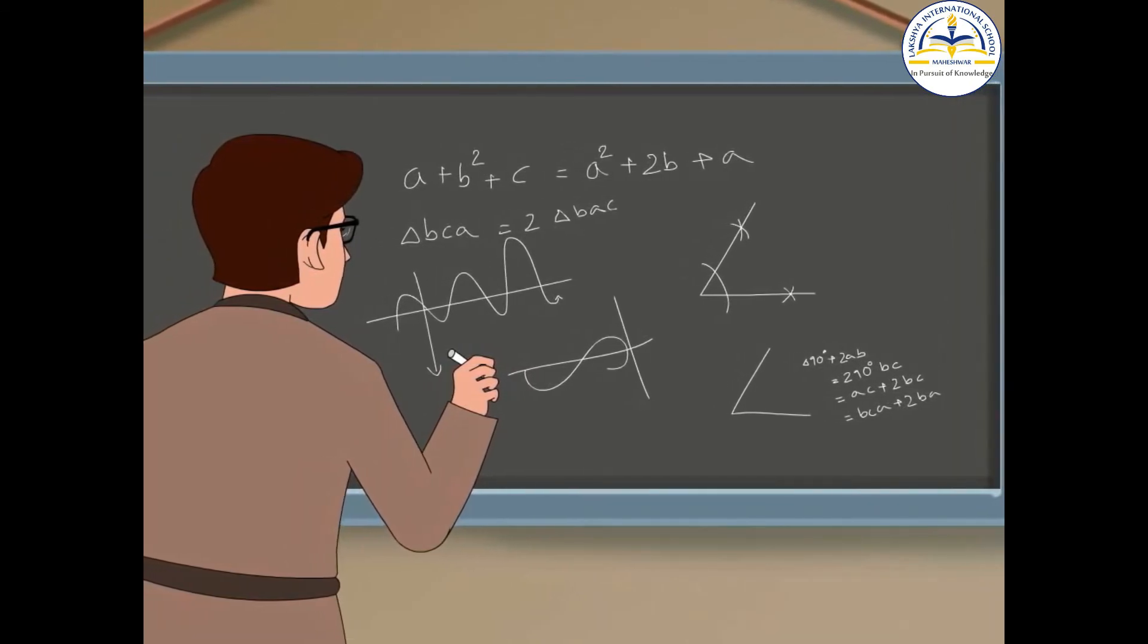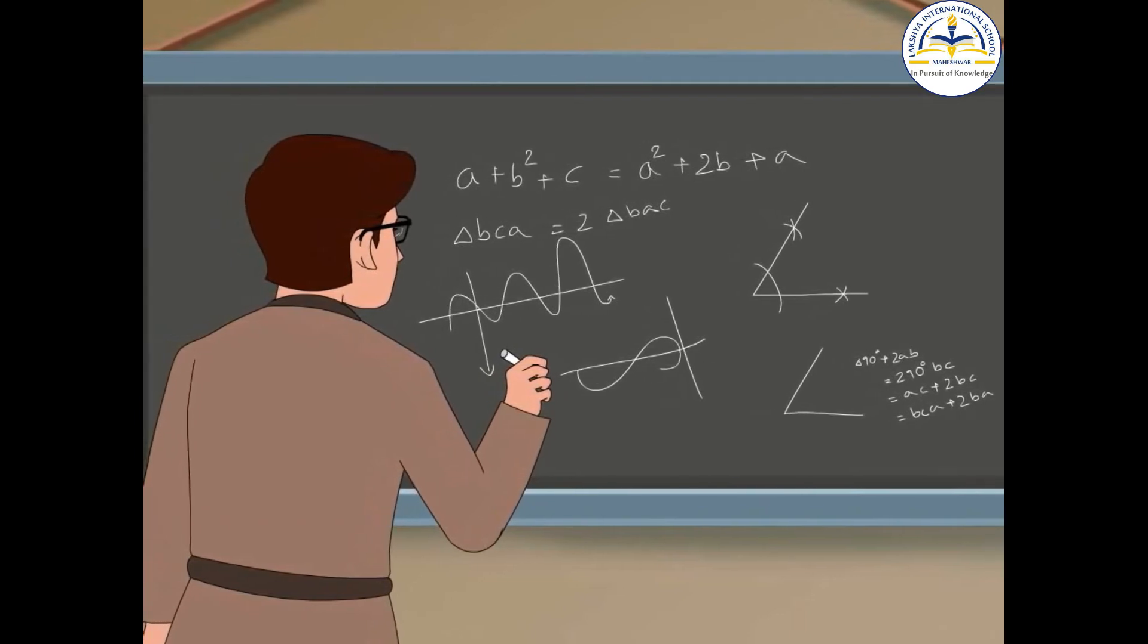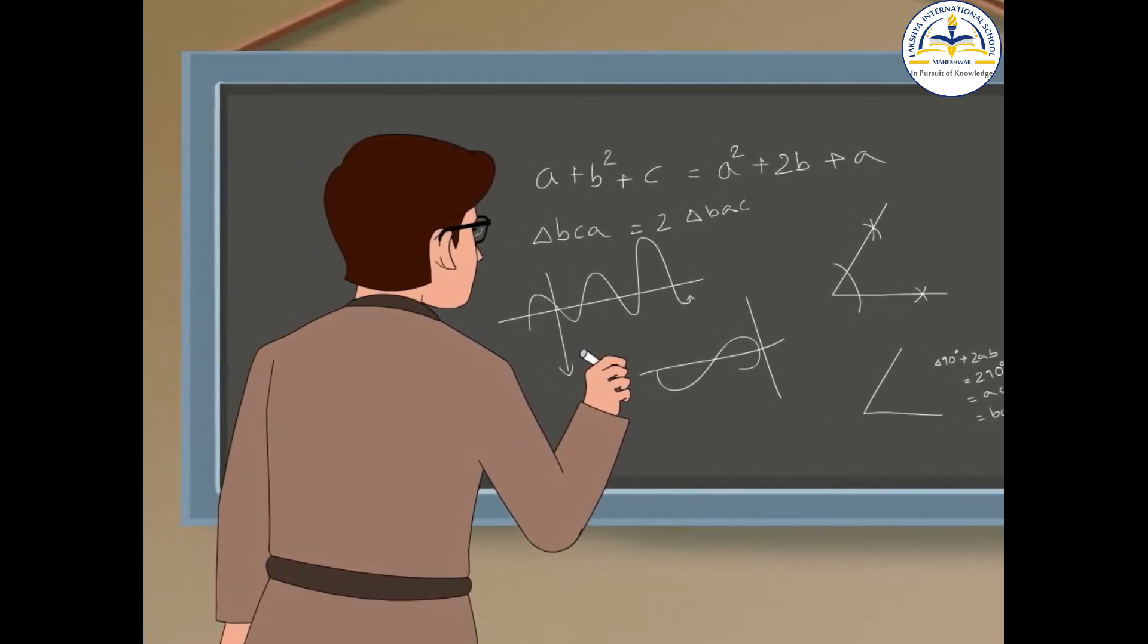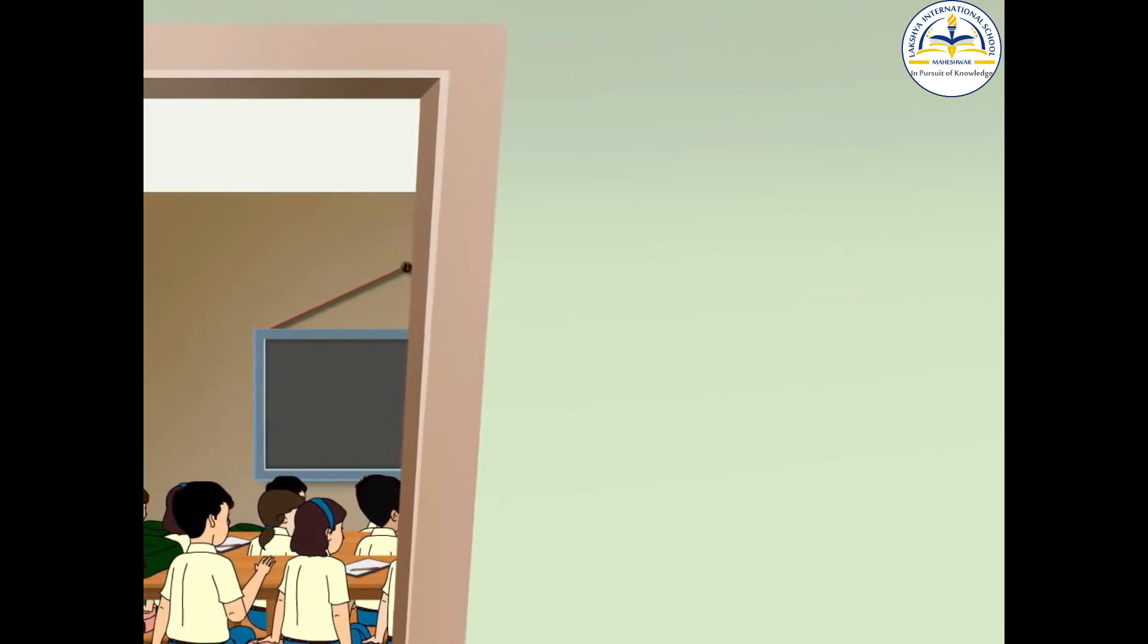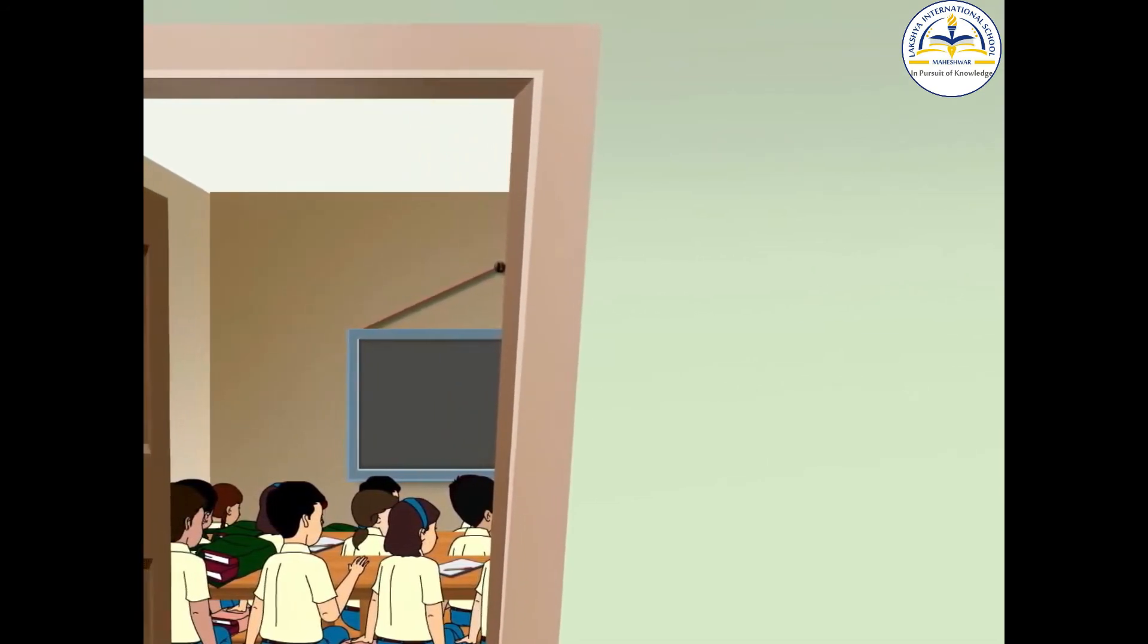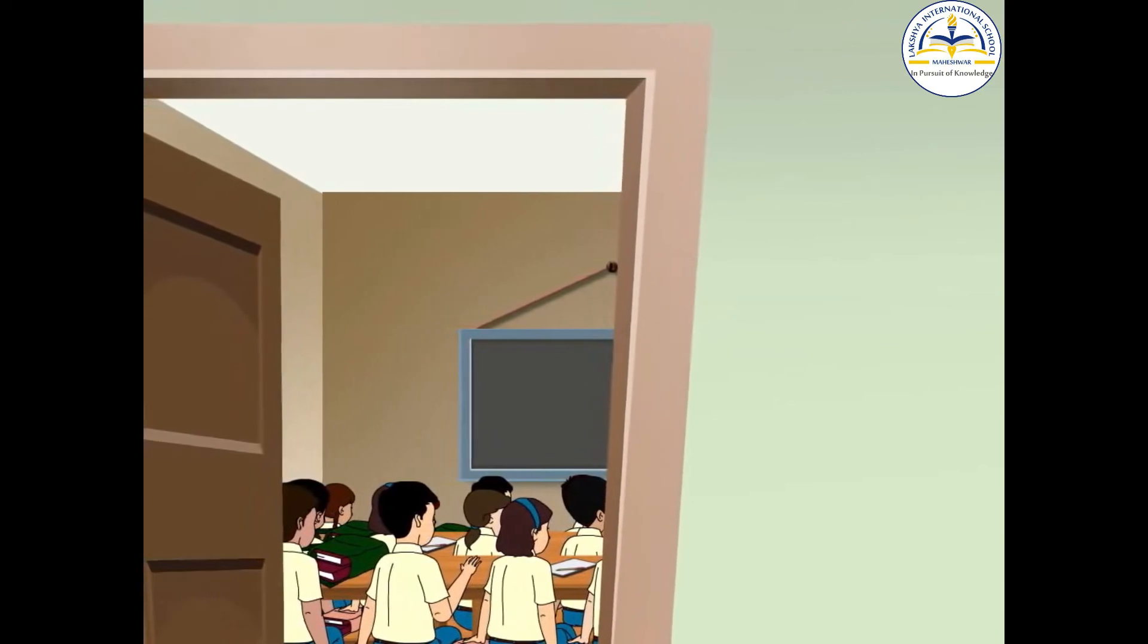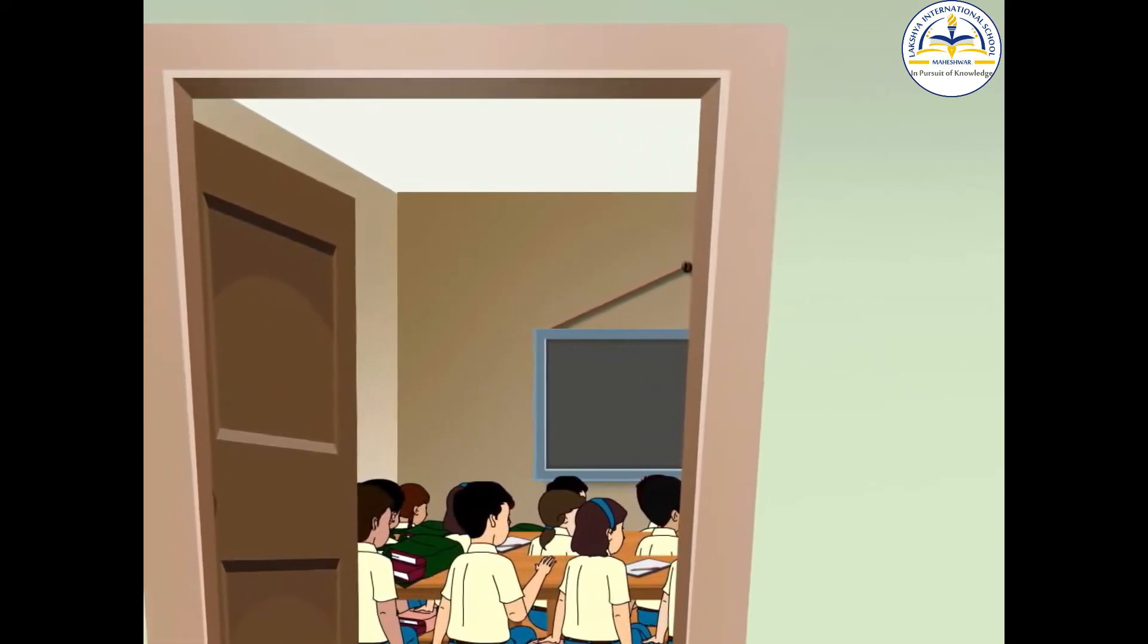Moreover, science is often taught in terms of equations. Although equations are a concise and accurate way of describing mathematical ideas, they frighten most people. When I wrote a popular book recently, I was advised that each equation I included would halve the sales. I included one equation, Einstein's famous equation E equals mc squared. Maybe I would have sold twice as many copies without it.